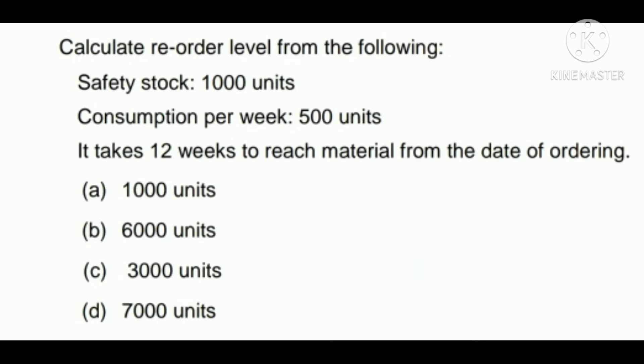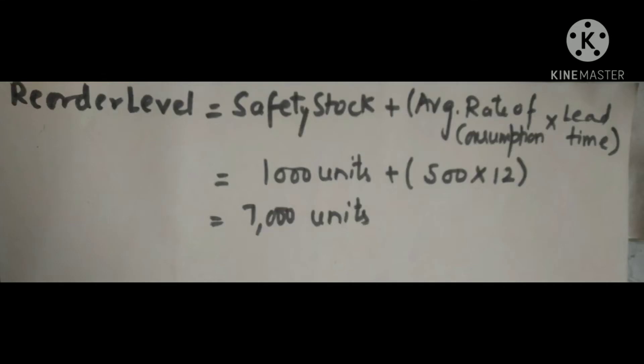Calculate the reorder level: safety stock 1,000 units, consumption per week 500 units, lead time 12 weeks. Options: 1,000 / 6,000 / 3,000 / 7,000 units. Reorder level = safety stock + (average rate of consumption × lead time) = 1,000 + (500 × 12) = 1,000 + 6,000 = 7,000 units. Option D is the correct answer.